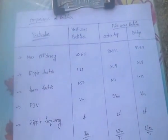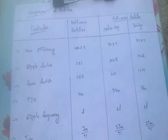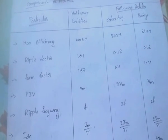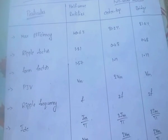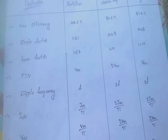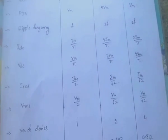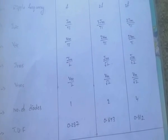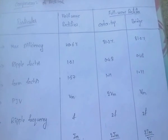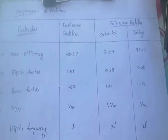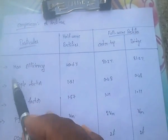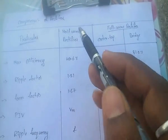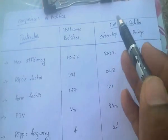Here is an important table regarding rectifiers. The parameters covered are: maximum efficiency, ripple factor, form factor, PIV, ripple frequency, IDC, VDC, IRMS, VRMS, number of diodes used, and transformer utilization factor. This table is very important for all competitive exams. The rectifier types are: half wave rectifier, full wave center tap rectifier, and bridge rectifier.